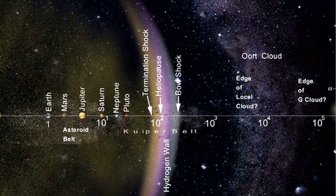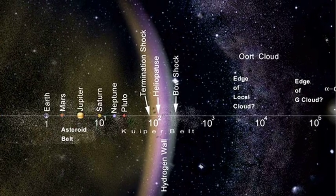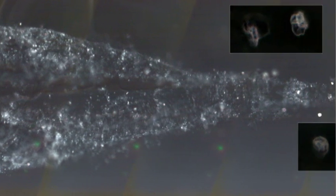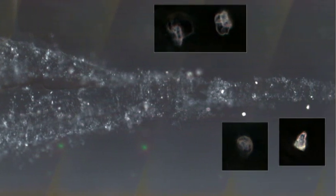But this rationalization failed outright once the scientists had real comet dust in their laboratories. The grains were simply too large, and the mineralogical and chemical compositions far too complex.